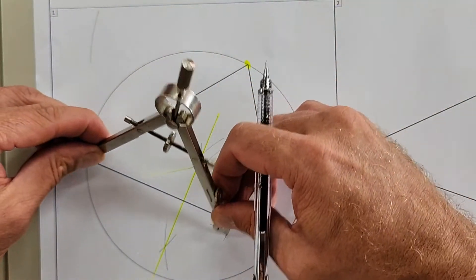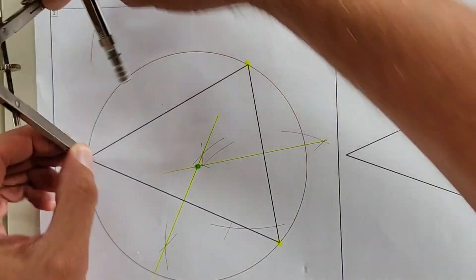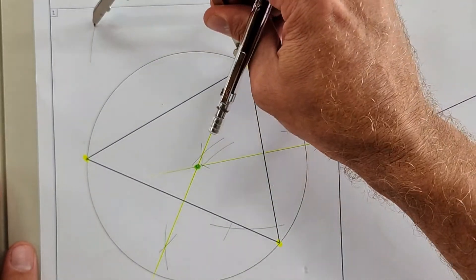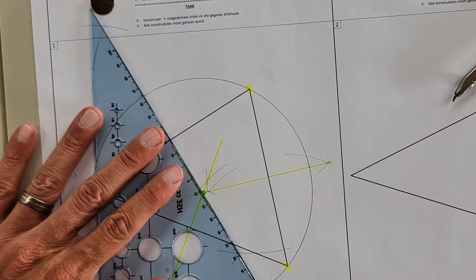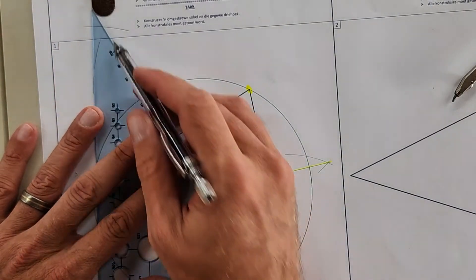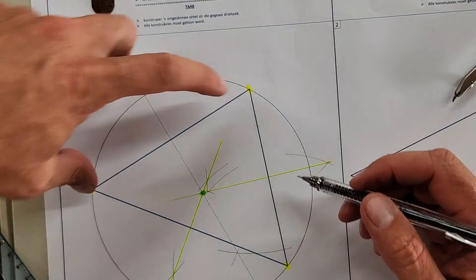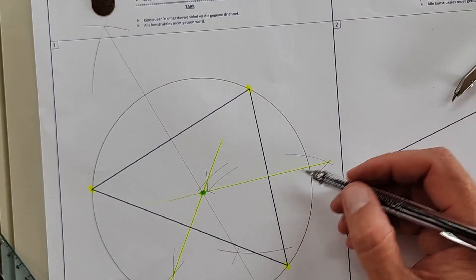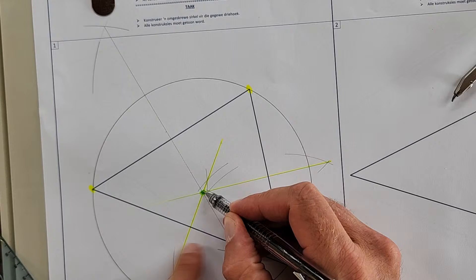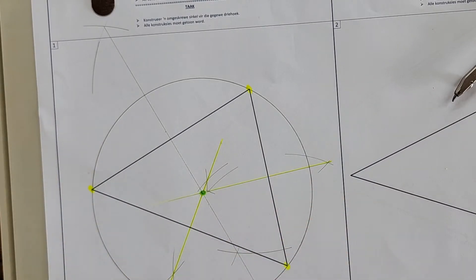That one is so big I missed it here on top. All right, and look here, it's going to go through that point that I've just determined. So it doesn't matter which side you bisect. Where any two of them meet, that center is, in other words, the radius.